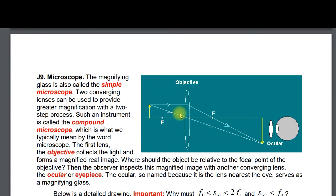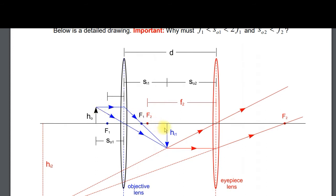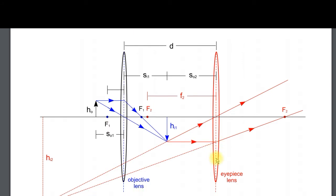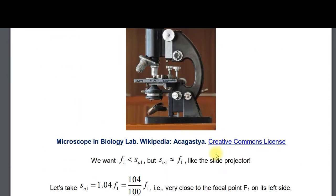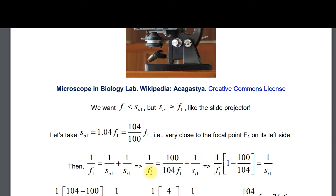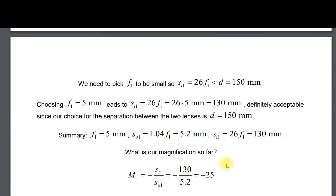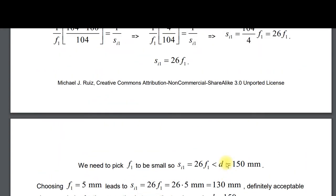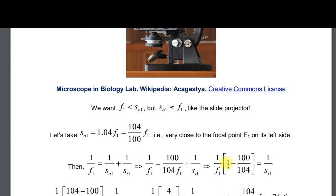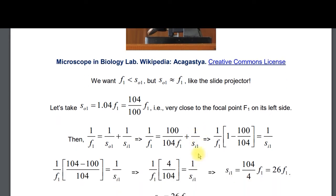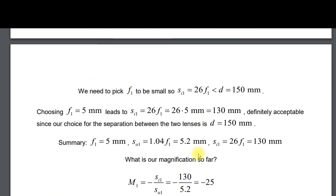For the microscope, the basic idea is two magnifications: real image magnification and then virtual image magnification. You have an objective and an eyepiece — also called the ocular. This kind of problem has your basic formulas in two steps, so you're basically doing the same thing twice. When you plug in numbers it's not too bad — this is an excellent problem to look at.